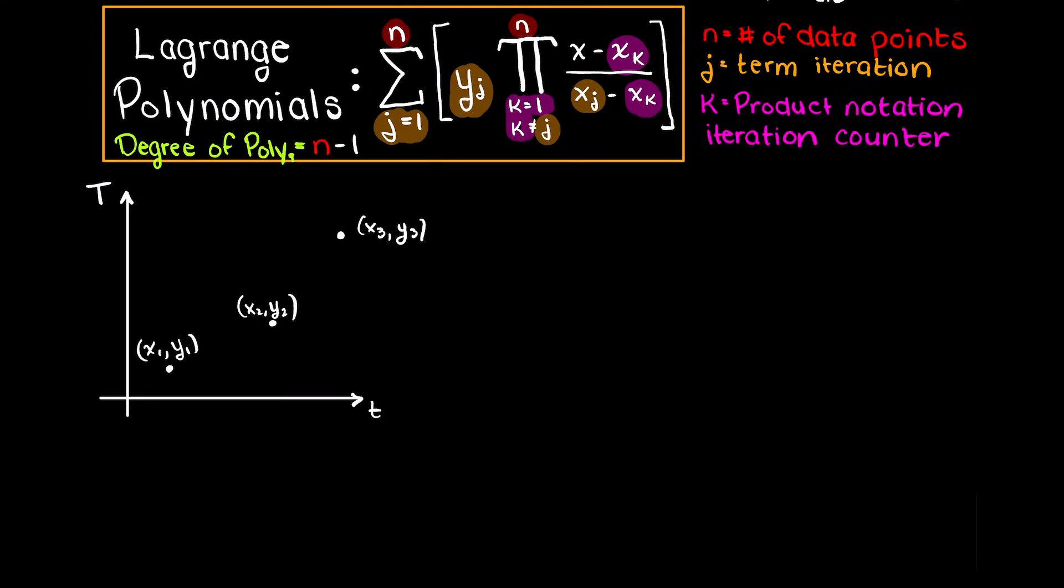This means that we will have a second degree Lagrange polynomial as we always have n-1 as our degree of Lagrange polynomial, which means that we will have three terms as our j term tells us here.